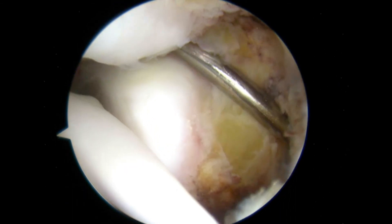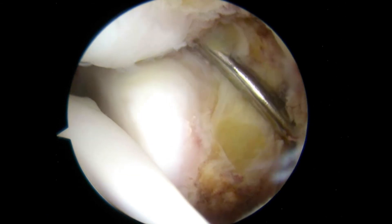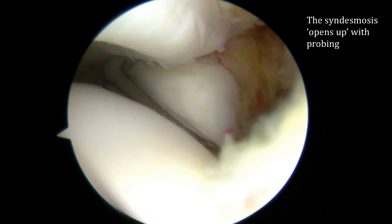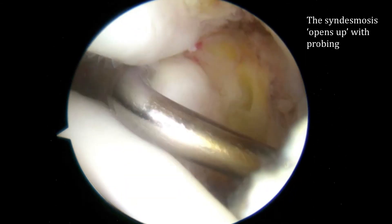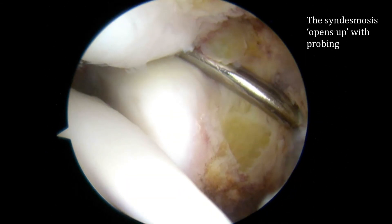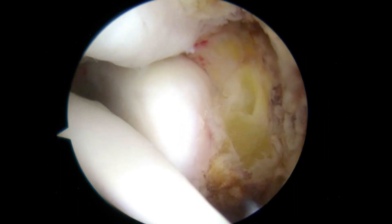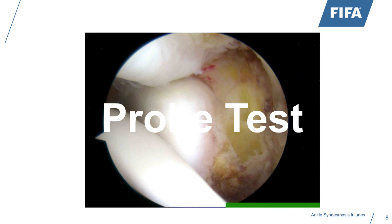When performing a diagnostic arthroscopy, this is what we call a probe test. Imagine you have a grade two in your clinical assessment and you want to be sure you don't lose time or enter a chronic situation. What you can do is send for a diagnostic arthroscopy with this probe test. The probe has about a 4.5 millimeter hook. If you twist the hook into the syndesmosis and it opens up on external rotation, that is what we call a positive test with the probe.